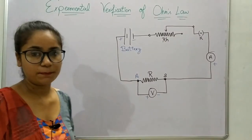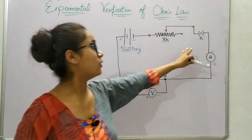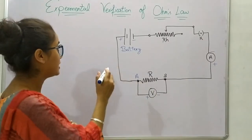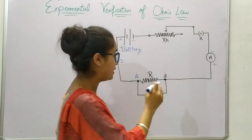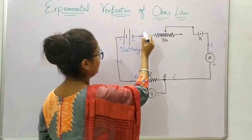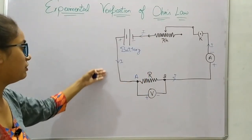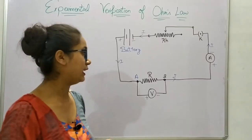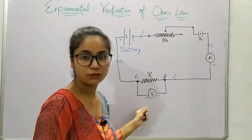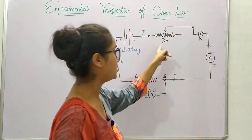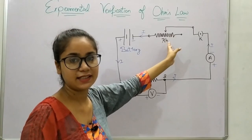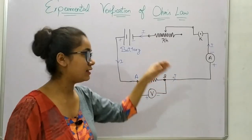Now let's move on to Ohm's law. When you switch on the key, current will start flowing through the circuit. The direction of flow of current is from the positive terminal of the battery to the negative terminal of the battery. As the current flows through the circuit, it will first pass through the resistance, then the voltmeter, then the ammeter, then the rheostat. When we change the resistance in the rheostat, there will be a change in the amount of current flowing.